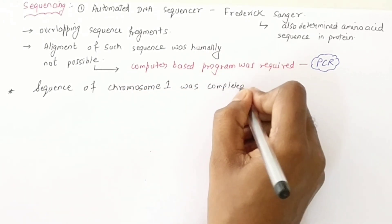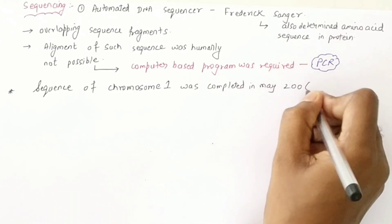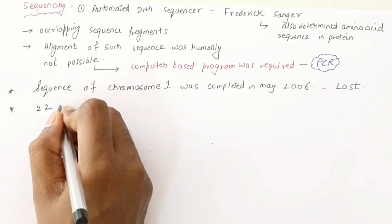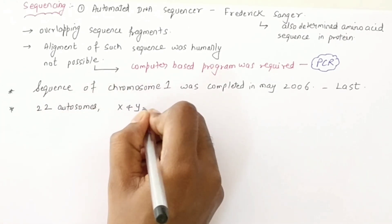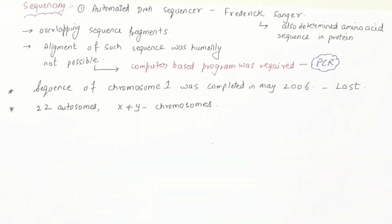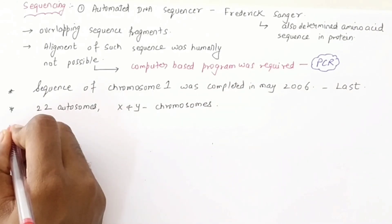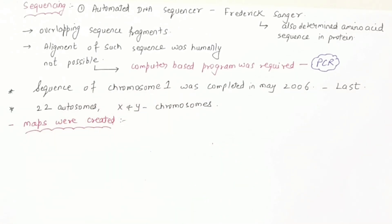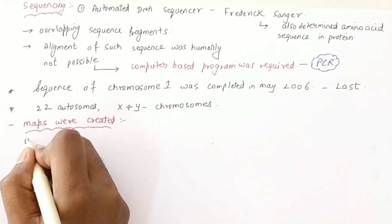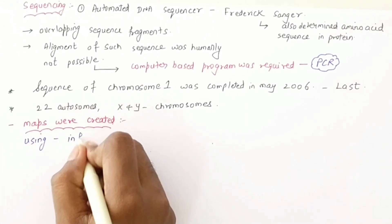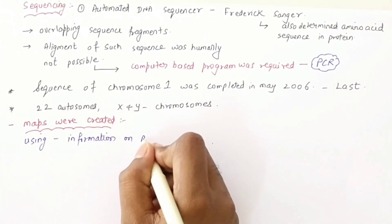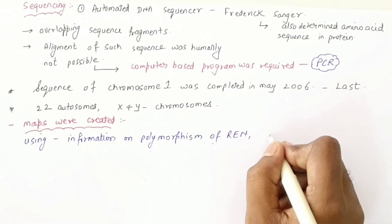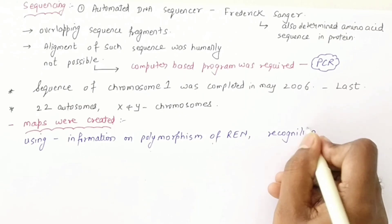Chromosome number 1 is the biggest chromosome, and its sequence was completed in May 2006. The sequencing covered 22 autosomes, one X chromosome, and one Y chromosome. Overall, the sequencing was completed in 2003.